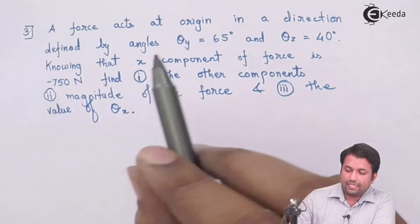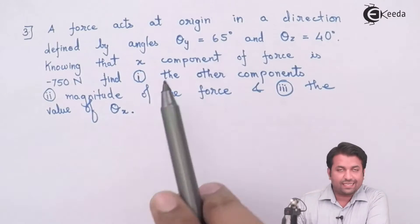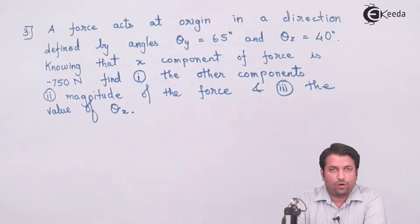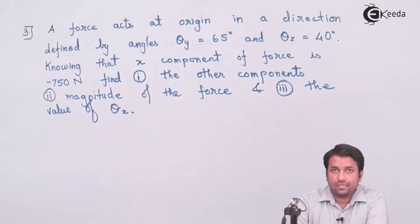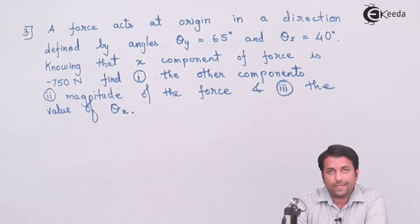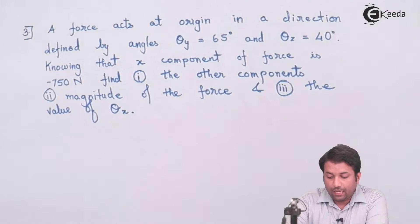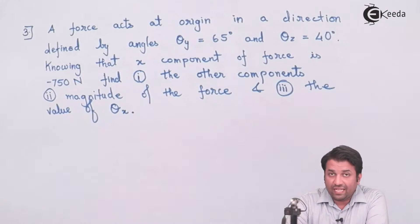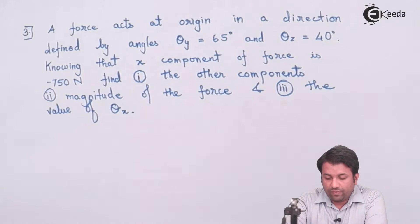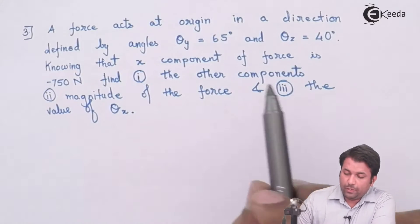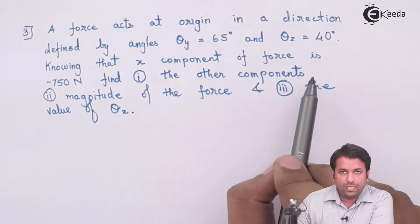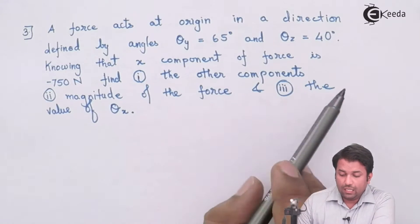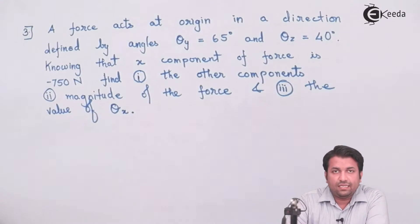In this case, the angle the force makes with the y-axis is given as 65 degrees and the angle with the z-axis is given as 40 degrees, but the angle with respect to the x-axis is unknown. We need to find that angle. Apart from that, the component along x is 750 newtons with a negative sign, so we have to take care of that. We also need to find the components along y and z.